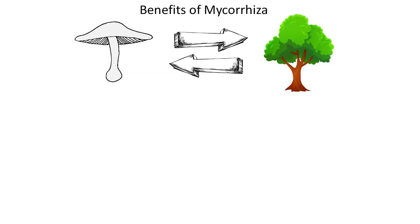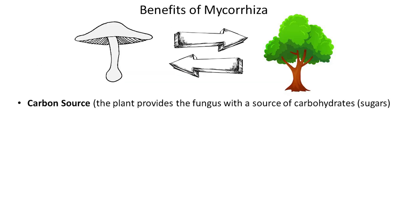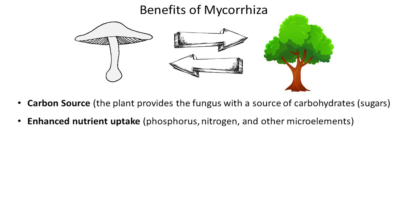Mycorrhiza offers benefits to both the fungus and the plant. The plant provides the mycorrhizal fungus with a source of carbohydrates, usually in the form of sugars produced through photosynthesis. In return, the fungus contributes to the plant's nutrient uptake by forming a network of hyphae in the soil extended from the plant root. This fine thread can explore a large volume of soil, increasing the plant's access to nutrients, especially such as phosphorus or nitrogen, and also enhances the plant's ability to absorb water from the soil.